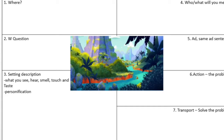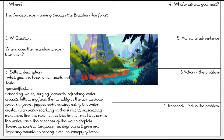Let's look at our story plan from yesterday and remind ourselves what we put. Number one was 'where' — we said we were in the Amazon River running through the Brazilian rainforest. Our W question was: where does the meandering river take them? Hopefully your W question is in third person. I originally put 'where does the meandering river take us' but I realised it needs to be in third person, so hopefully you can change yours if you need to.